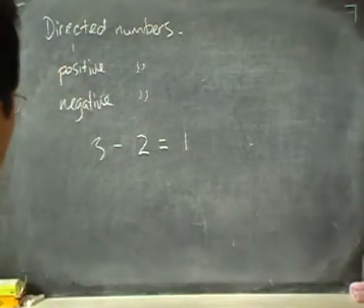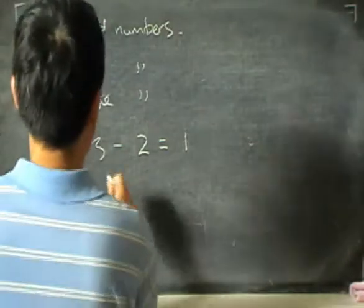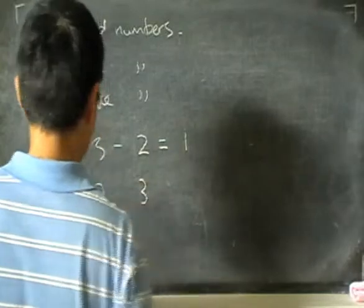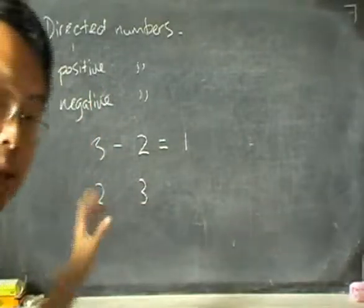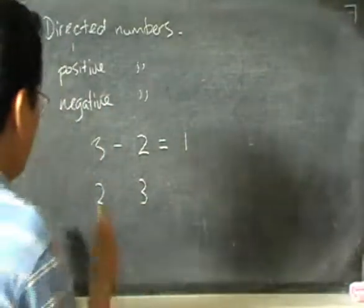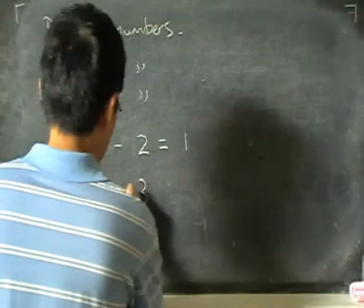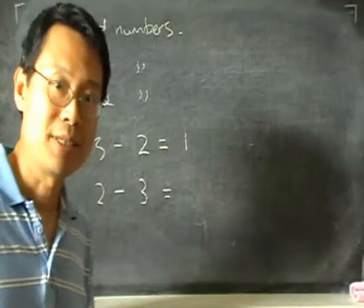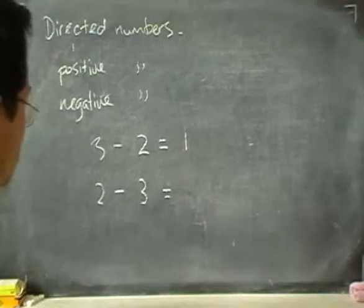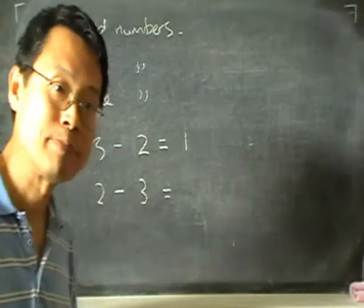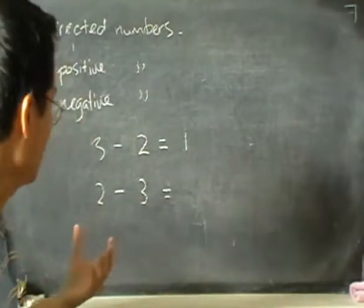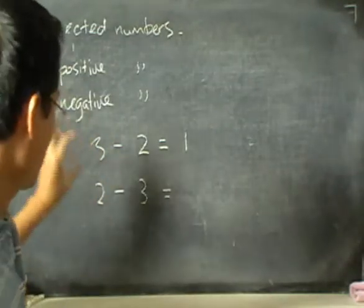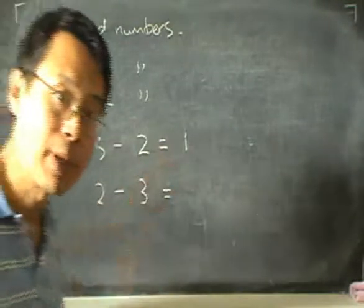Now let me do this a bit differently. Let me write the 2 in front and the 3 after, and subtract these two. If I take 2 minus 3 now, what do I get? 2 minus 3 — 2 is smaller than 3. So how can I take a smaller number and minus a bigger number?